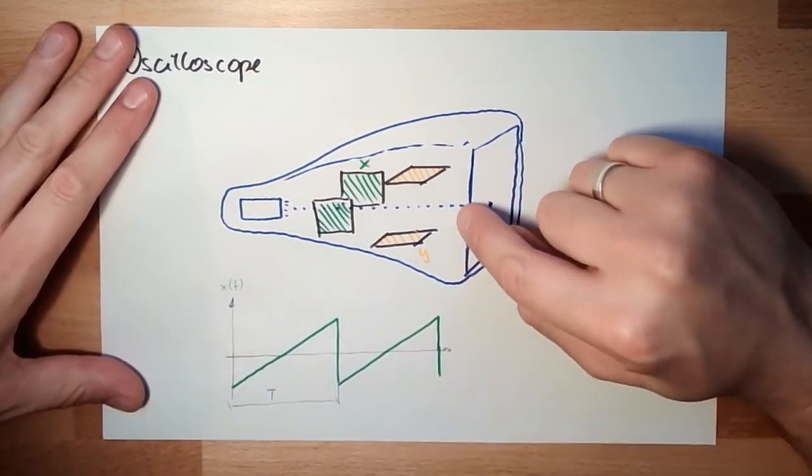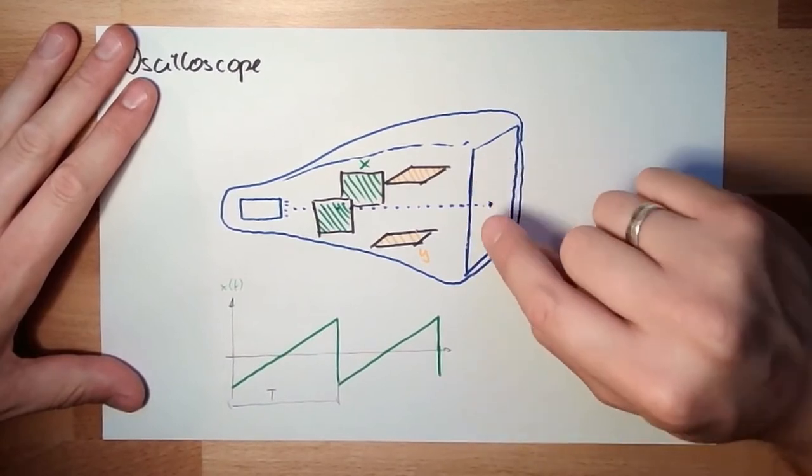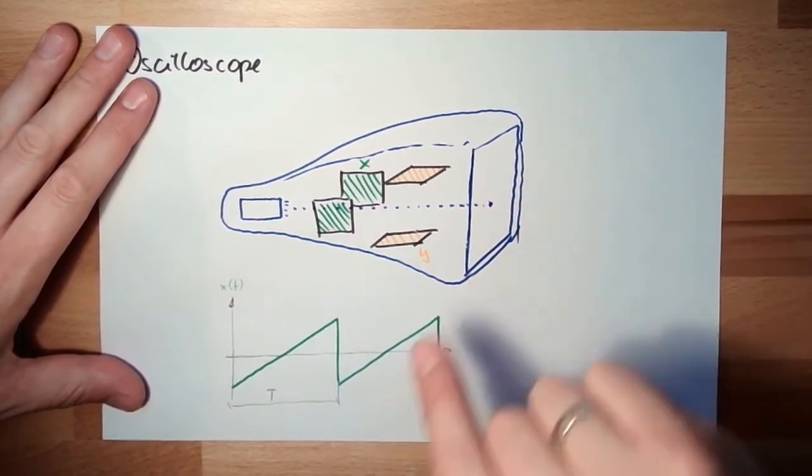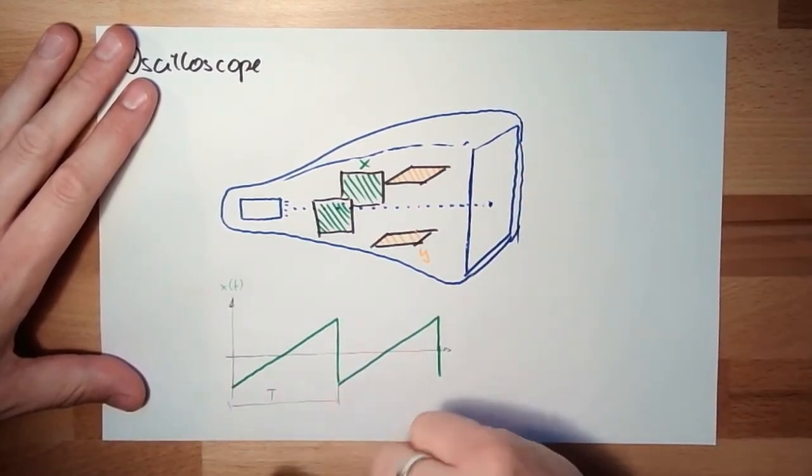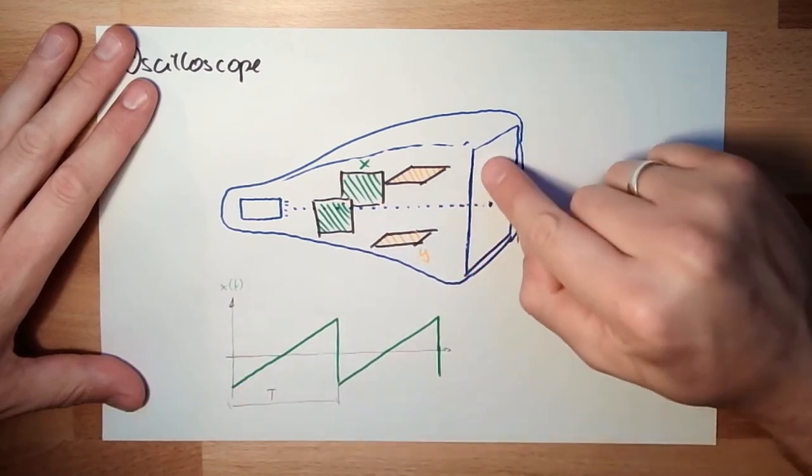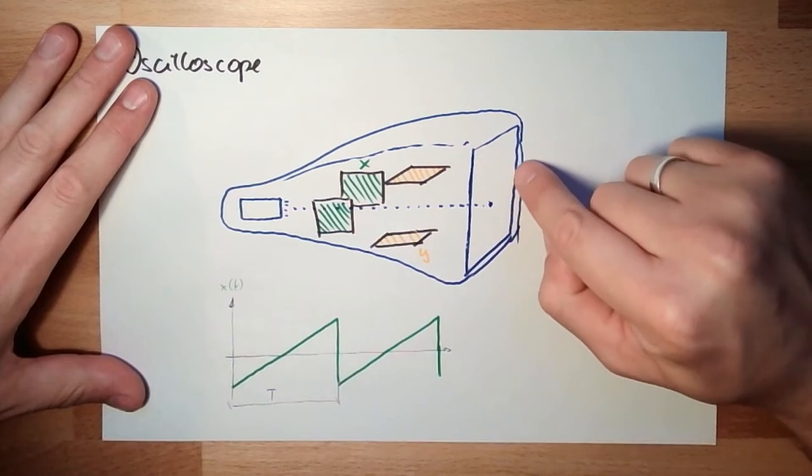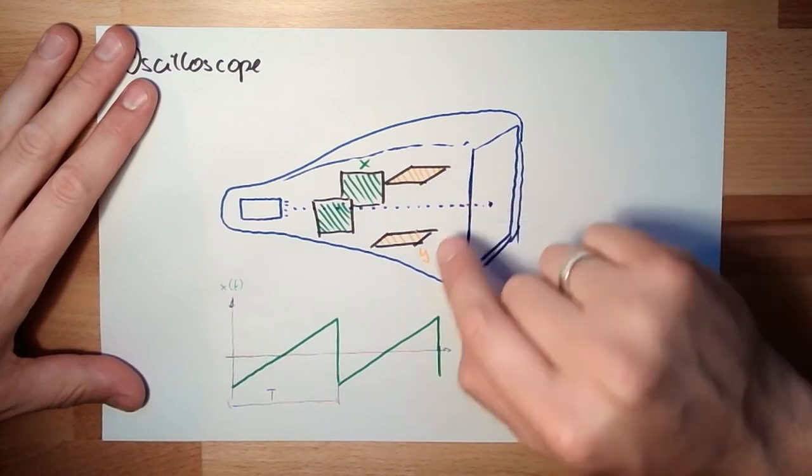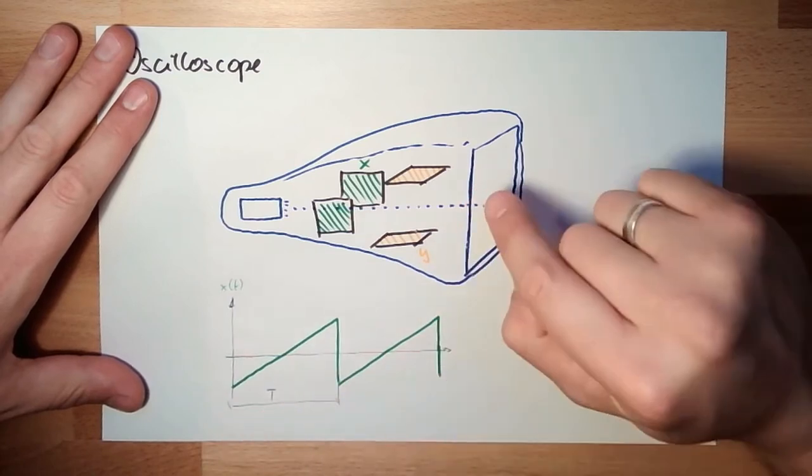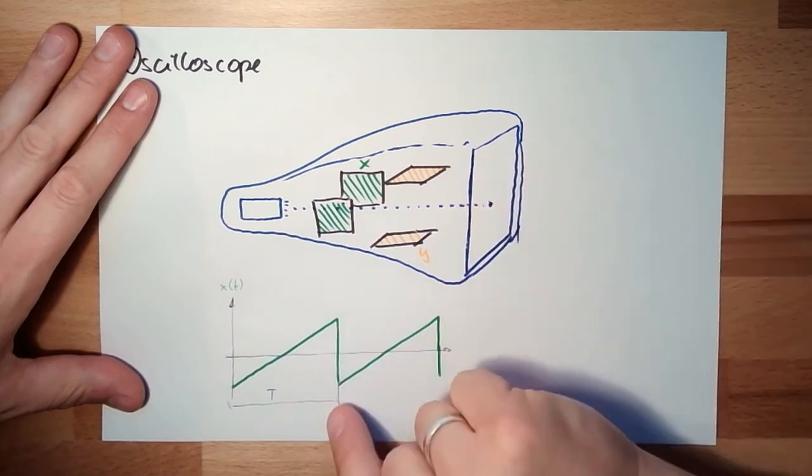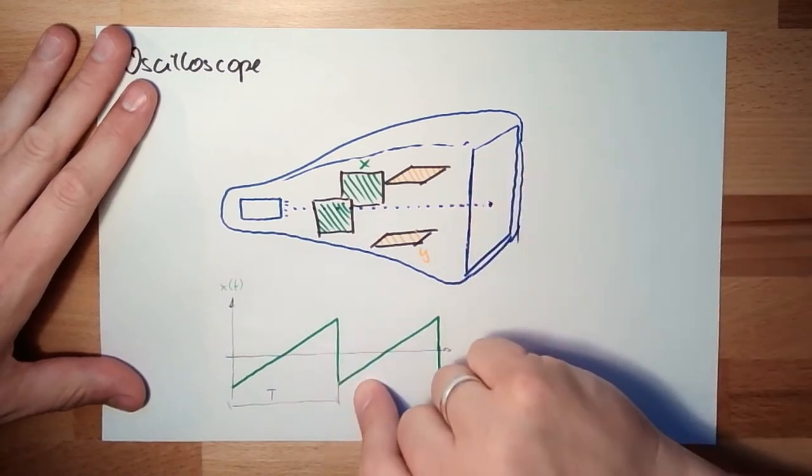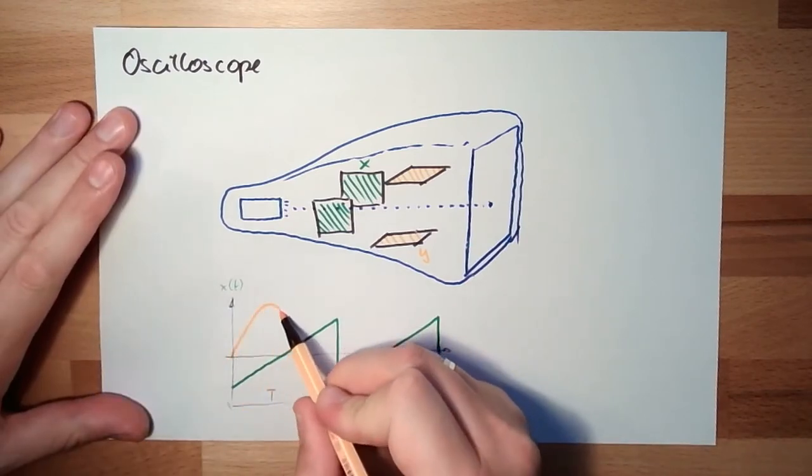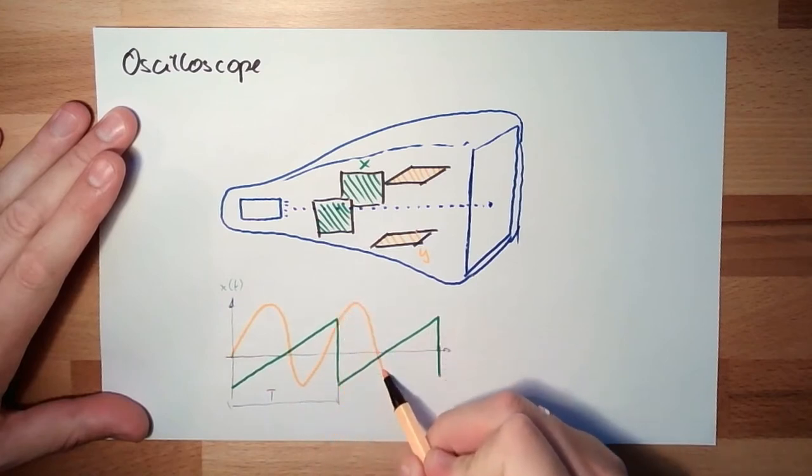Because if you watch now a sinus wave, the sinus wave and this wave are usually not in sync. Because the sinus wave maybe has 50 Hz and this maybe has 70. Then I see some part of the second sine wave also. And then it would start at another point at the x zero position. Let's say, this is the sine wave I'm watching, or this is the waveform I'm watching.